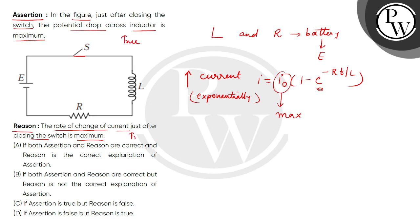So now, the assertion is justified because current is maximum, so this is why potential drop will reach maximum. The correct answer will be option A. Thank you.